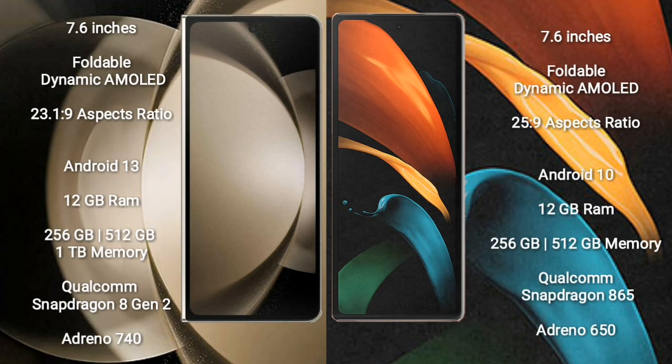Samsung Galaxy Z Fold 5 comes with a 7.6-inch foldable dynamic AMOLED display and success pressure 23.1.9. Samsung Galaxy Z Fold 2 comes with a 7.6-inch foldable dynamic AMOLED display and success pressure 25.9. Samsung Galaxy Z Fold 5 runs on the Android 13 operating system.